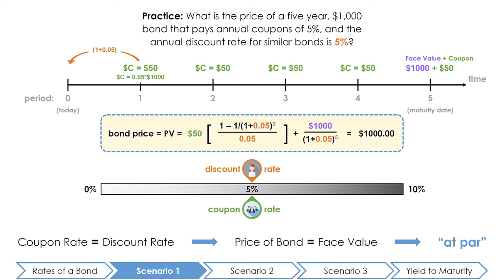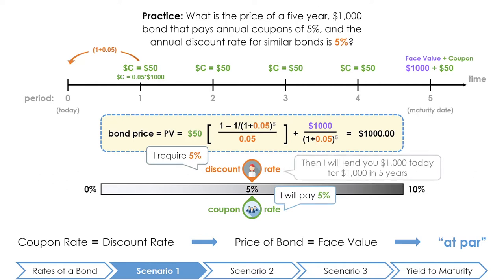This is because the annual cost of capital of five percent — being the annual discount rate — is equal to the amount the bondholder receives in coupon payments. So the bondholder is willing to pay exactly one thousand dollars today to receive one thousand dollars in five years. Bond prices are often quoted as a percentage of the principal, so the par value is set at 100, meaning the price is one hundred percent of the principal.